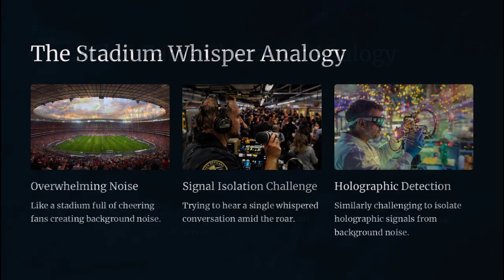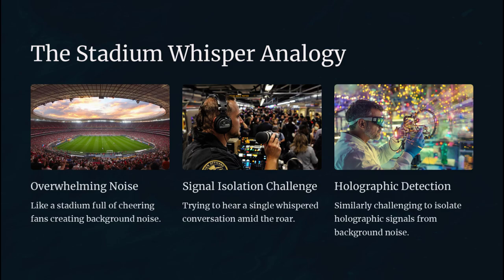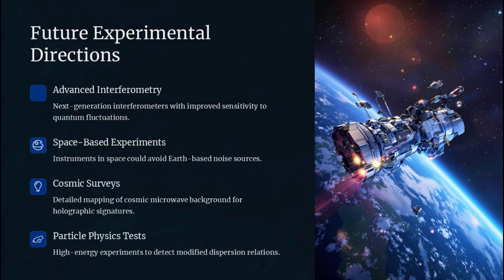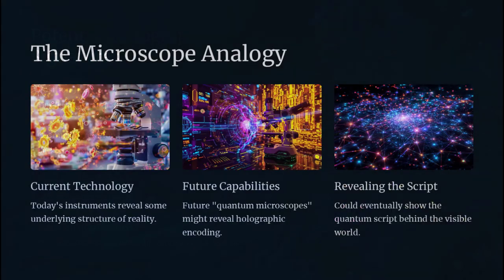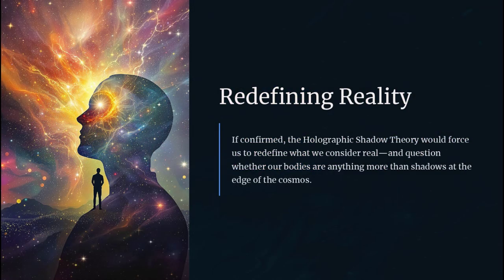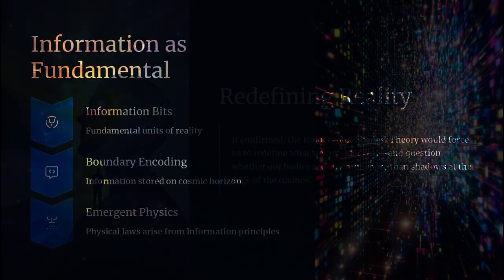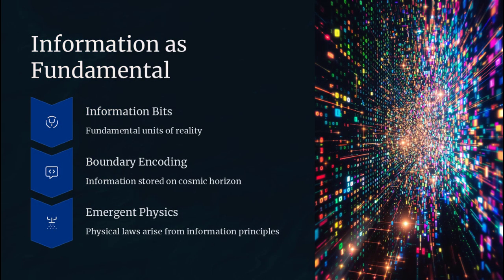And then there is the matter of empirical testability. If our world is indeed a holographic projection, we should observe specific deviations from standard predictions - perhaps in the fine-scale noise of interferometer readings, unexpected correlations in cosmic microwave background fluctuations, or novel dispersion relations at ultra-high energies. Experiments like GEO600 and proposals to detect holographic jitter have so far yielded no definitive signal, leaving the hypothesis tantalizing but unconfirmed.